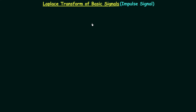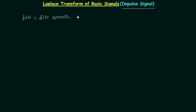In this lecture we will calculate the bilateral Laplace transform of the unit impulse signal. Our time domain signal F(t) is equal to the unit impulse signal δ(t), and the corresponding Laplace transform is represented by F(s).